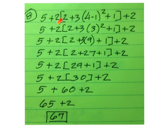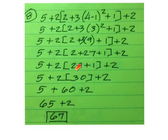On number 8, go to the brackets. Inside the brackets, go to the parentheses to get 4 minus 1, which is 3. Squared is 9. Times 3 is 27. 2 plus 27 plus 1 is 30. Times 2 is 60. 5 plus 60 plus 2 is 67.